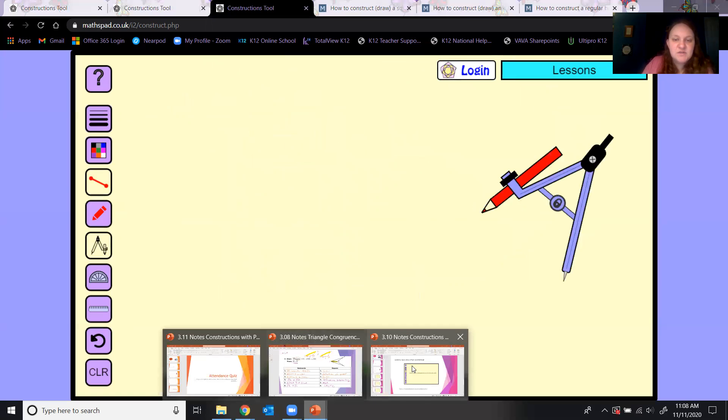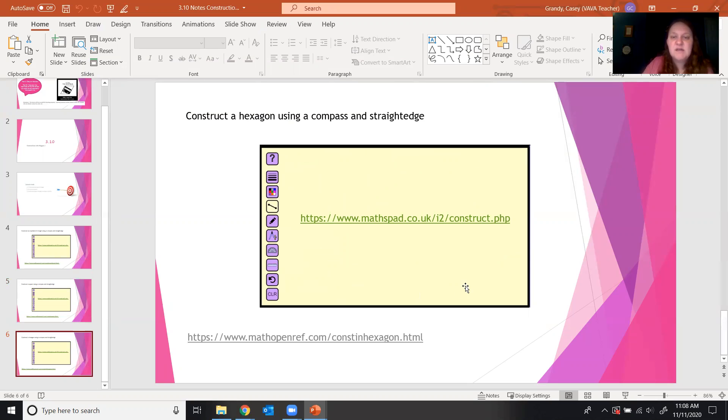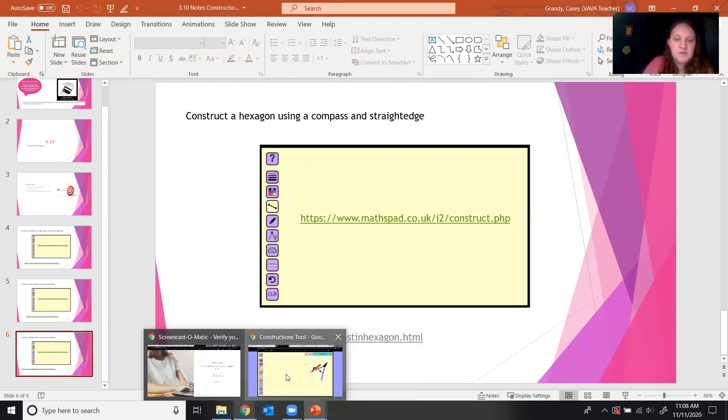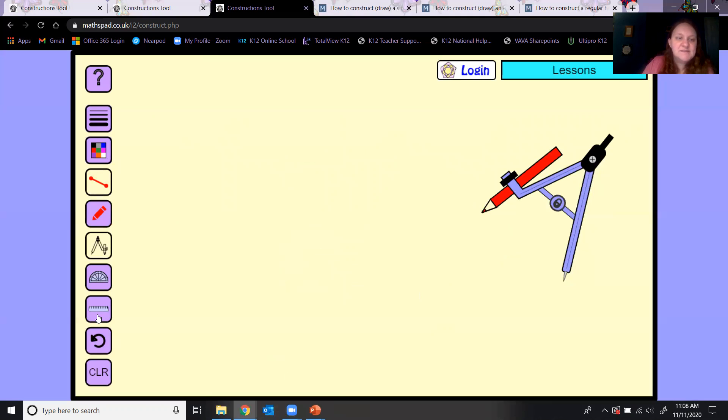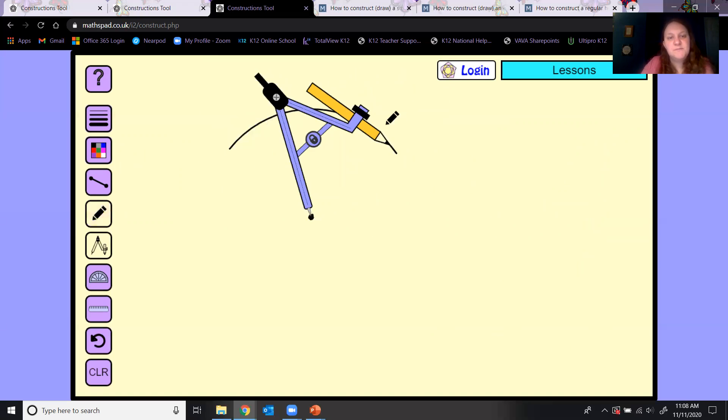The last construction we need to know for this unit is how to do a hexagon. This one's my favorite, I think it's really fun. You're going to start with a circle. Give yourself a point as the center. Definitely make sure you label where the point is because once you move that compass, you won't know where it is anymore. Put your point on the compass on the point you just gave yourself and give yourself a circle.